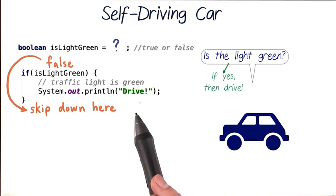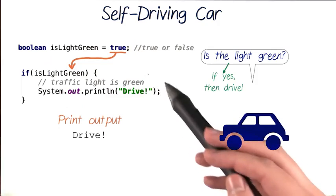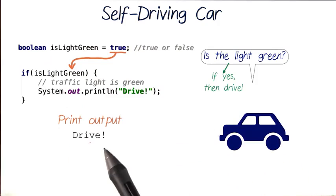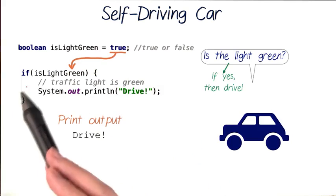So this is our finished if statement. If isLightGreen is true and we run this code, we'll enter our if statement block and the print output will be drive. If our test condition isLightGreen was false, we wouldn't print out anything.